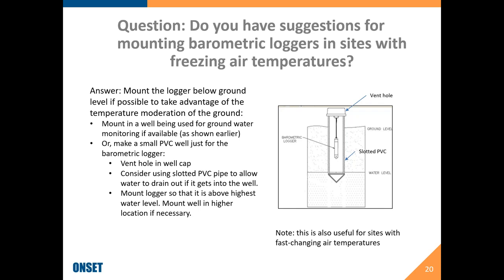How do I use my own barometric pressure data from my own weather station to calibrate water level data? If you have a HOBO weather station, you can link to that data file directly from the barometric compensation assistant — just as easy as using a barometric pressure file from a water level logger. If you have another brand of weather station, you can use that data as well by exporting it from the associated software. You may have to process the data into the right format for importing into the barometric compensation assistant, but the assistant will allow you to do that.